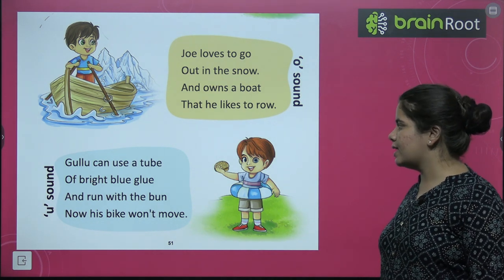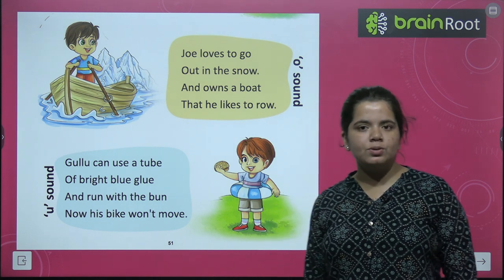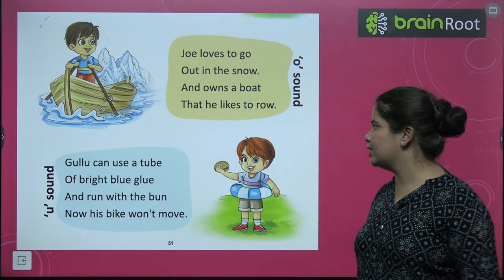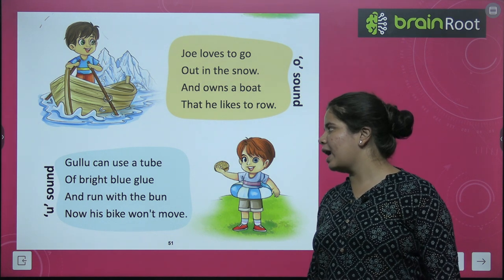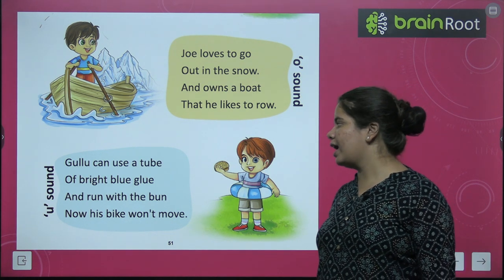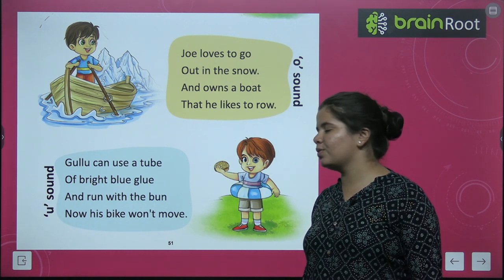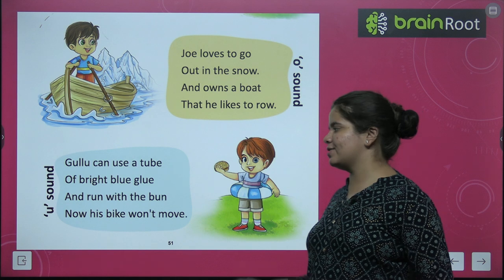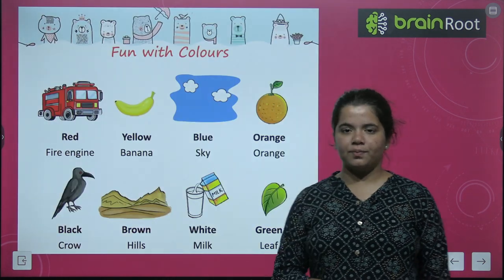Now you have the U-sound poem. Gulu can use a tube of bright blue glue and run with the bun. Now his bike won't move. This was the U-sound song.